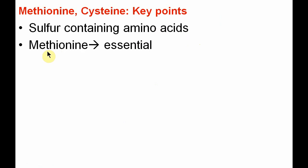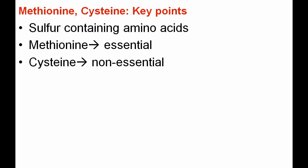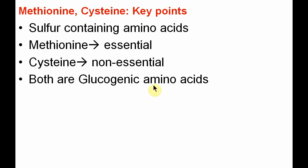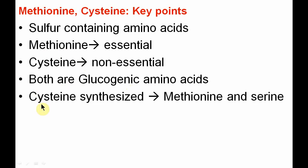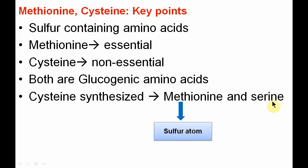Methionine is an essential amino acid, so it must be provided in the diet. Cysteine is a non-essential amino acid and is synthesized from methionine in our body. Both are glucogenic amino acids, meaning their carbon skeletons are utilized for the production or synthesis of glucose. Cysteine is synthesized from methionine and serine, where methionine provides the sulfur atom and serine provides the carbon and nitrogen atoms.